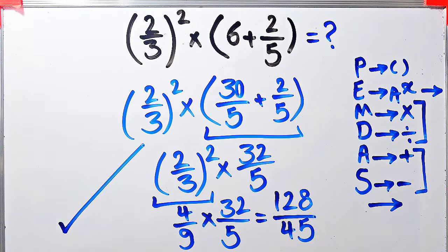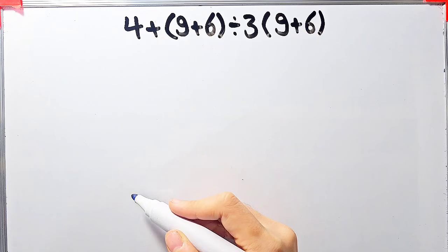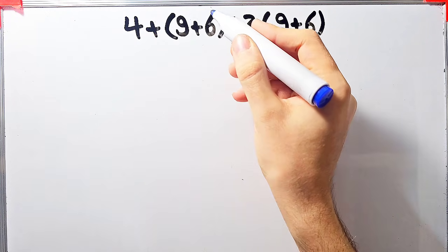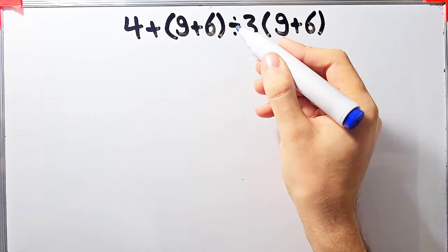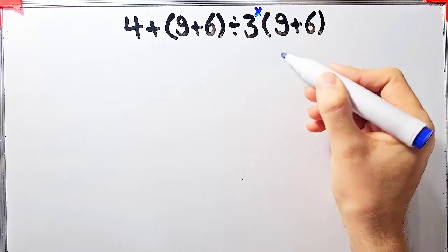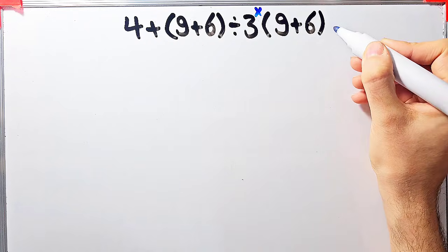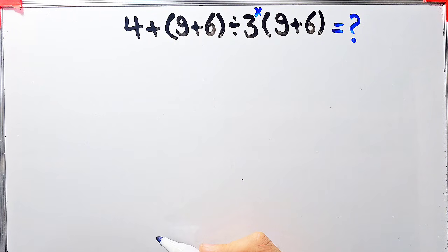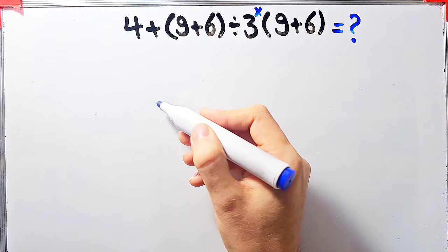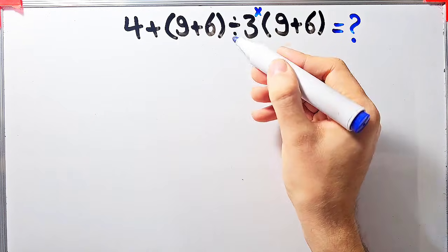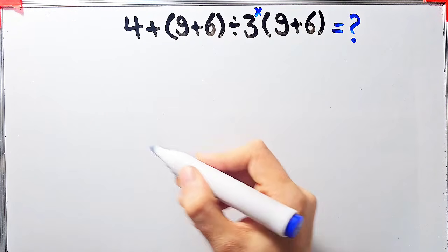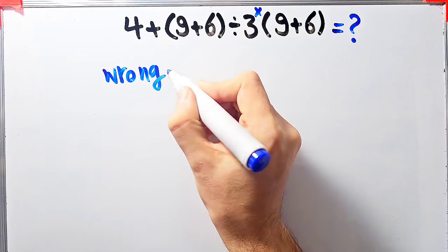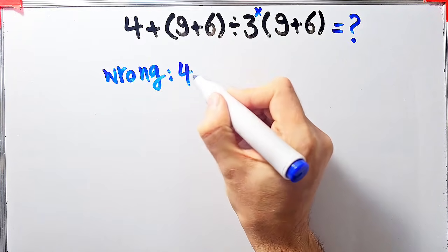Let's solve another question about the PEMDAS rule. In this question we have: four plus open parentheses nine plus six close parentheses, divided by three, times open parentheses nine plus six close parentheses. What is the answer? In this question we have addition, parentheses, division, and multiplication.